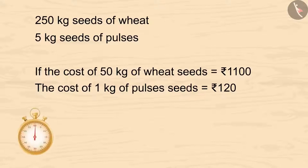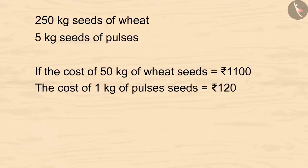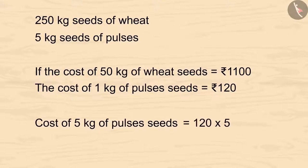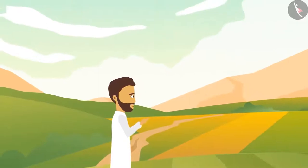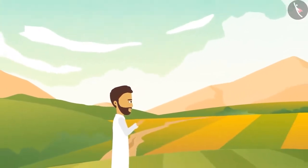So how much money did Garim Bhai spend on pulse seeds? Kids, you can pause the video and calculate it. The cost of 1 kg of pulse seeds is Rs. 120. So the cost of 5 kgs would be 120 multiplied by 5, which is Rs. 600. Karim spent Rs. 600 on pulse seeds.